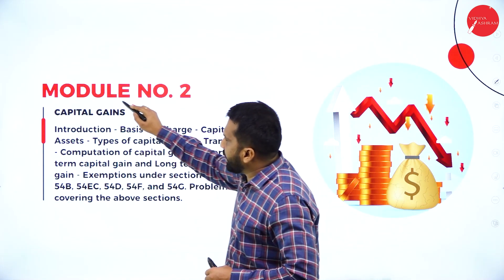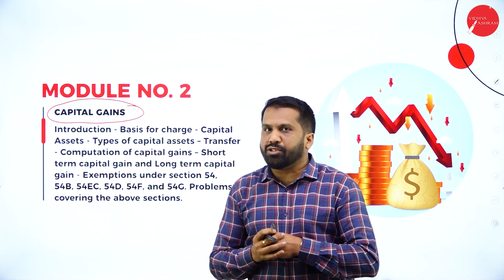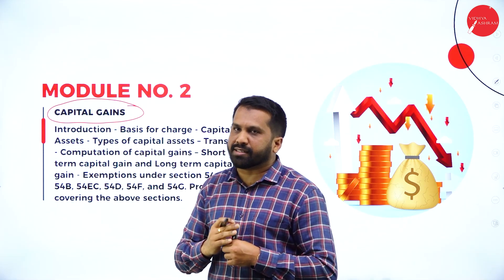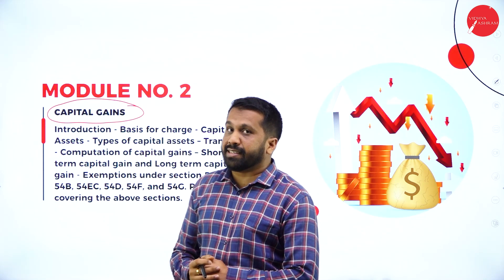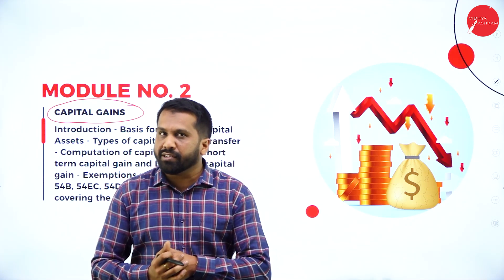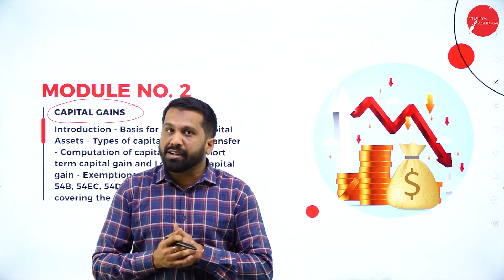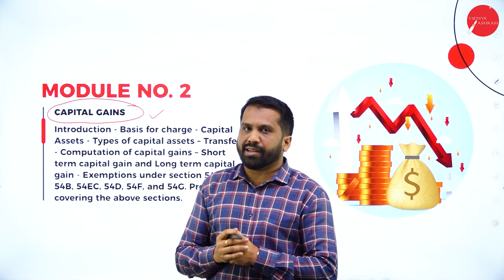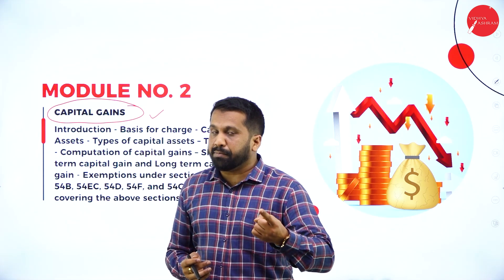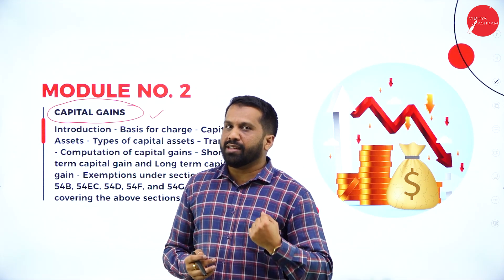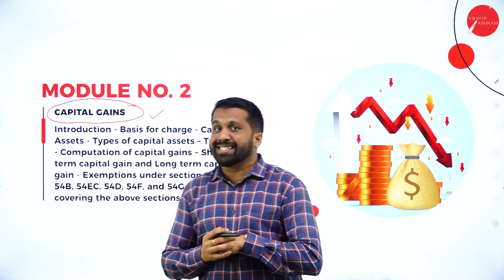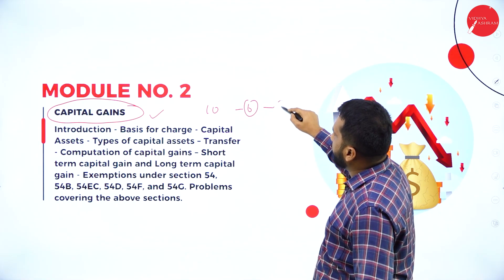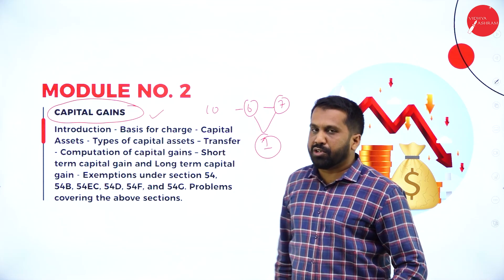The second topic is capital gain. You may wonder what capital gain means. Assets used in business — like machinery, furniture, or a vehicle — if sold, we consider that as capital gain. For example, you bought a bike for ten thousand rupees, and after depreciation the value is six thousand, but you sell it for seven thousand. That one thousand profit will be called your capital gain.